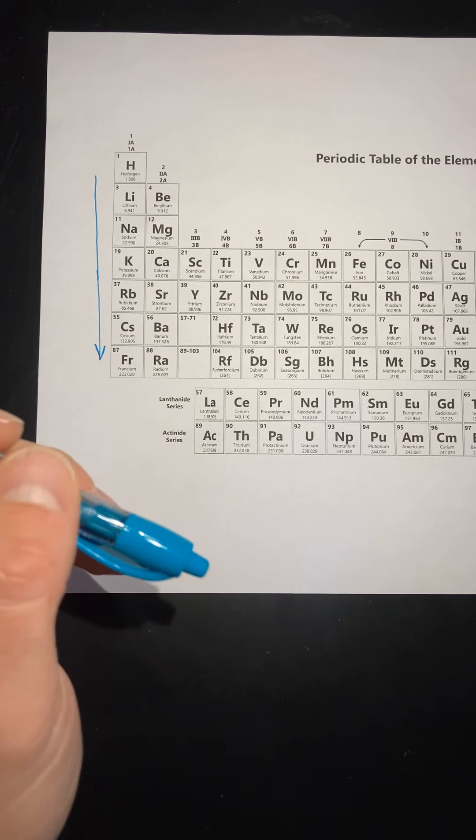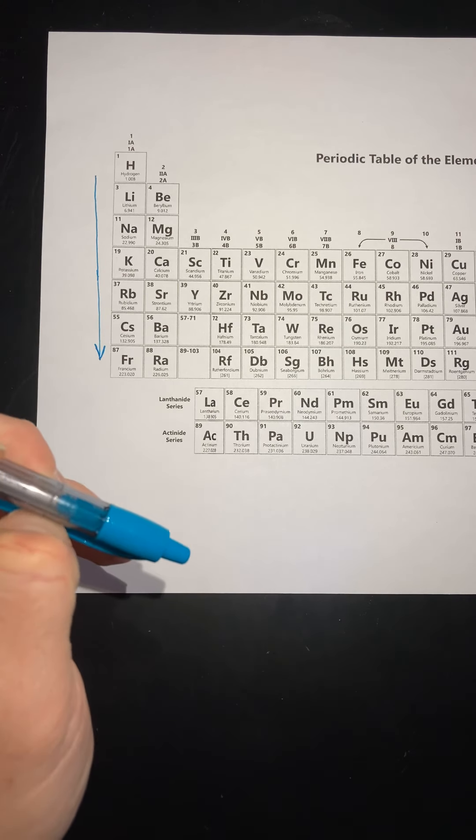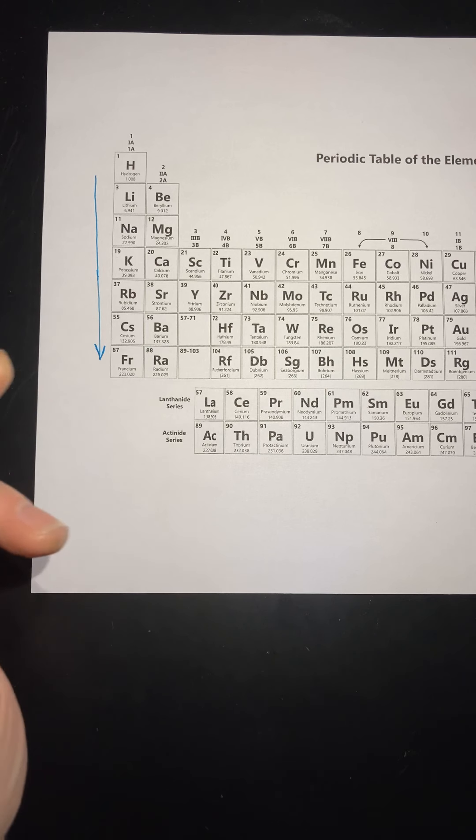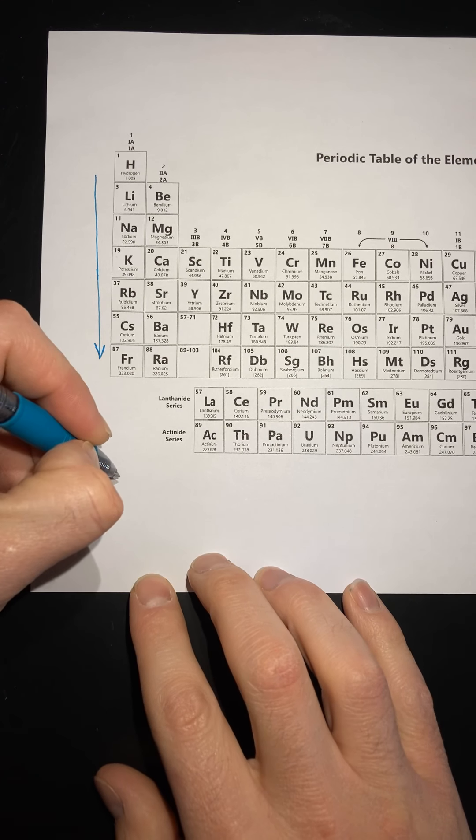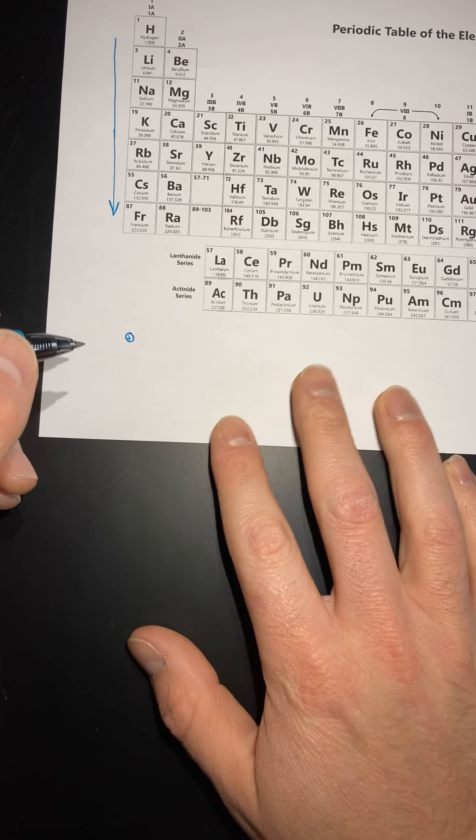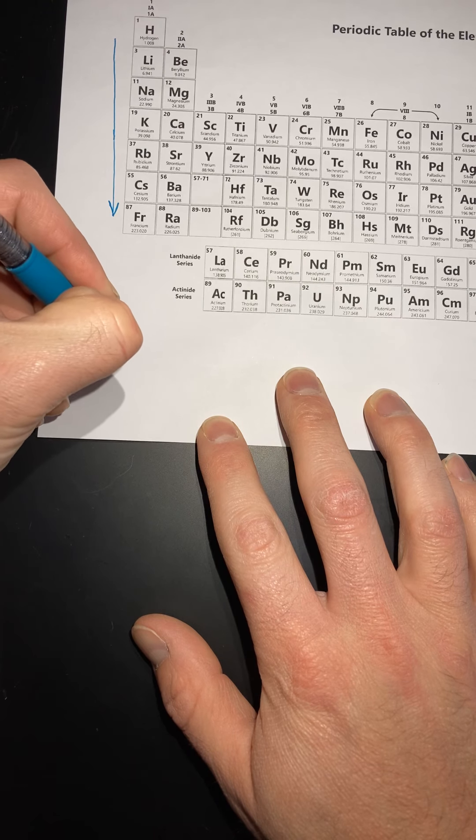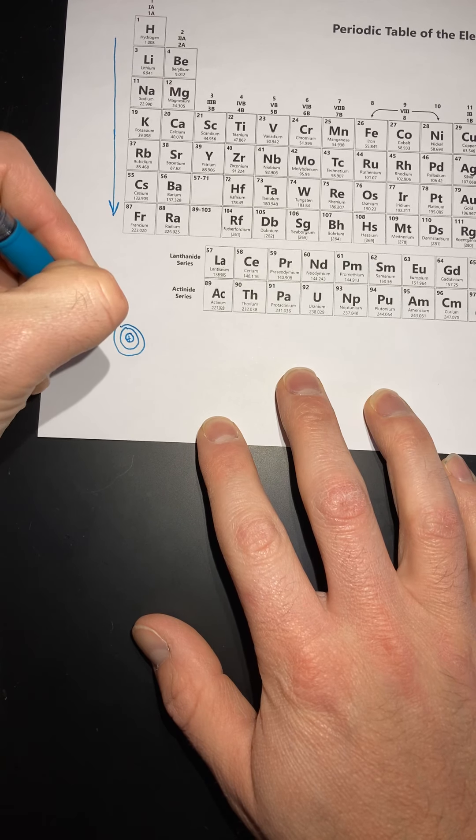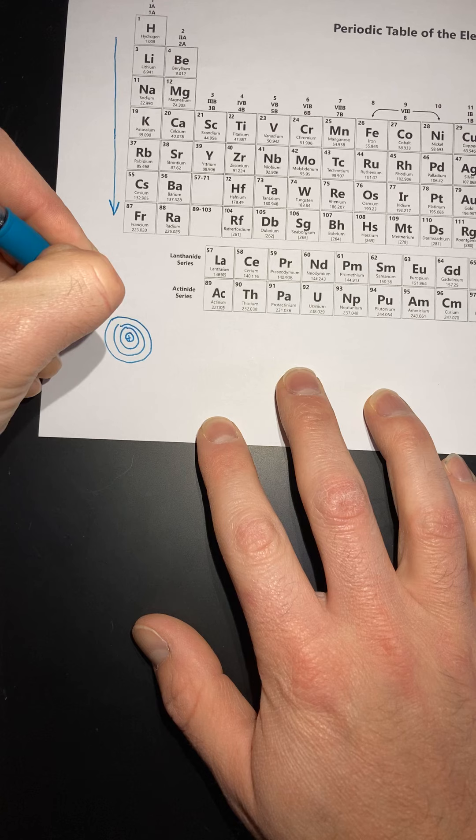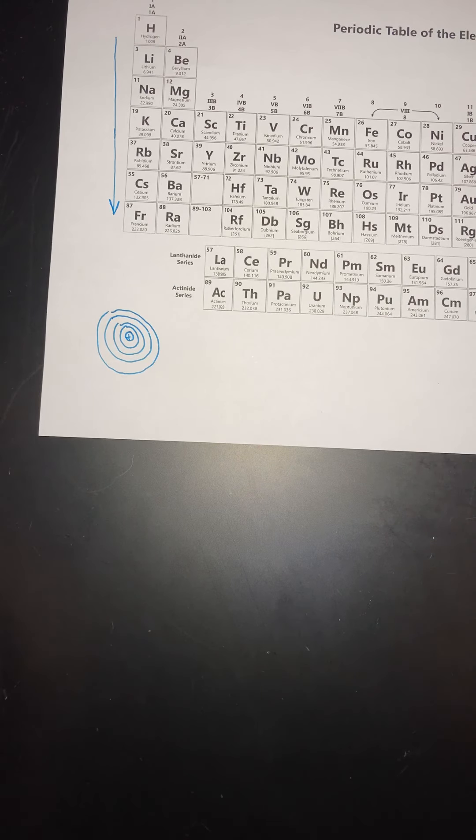Okay, listen, you do gain electrons, but the most important thing with the size of the atom is the energy level. Because think about this. Like, if this is your nucleus right here, hydrogen is going to have one energy level. Lithium is going to have two. Sodium is going to have three. Potassium is going to have four. And it's going to keep getting bigger and bigger and bigger the further you go down. Does that make sense?